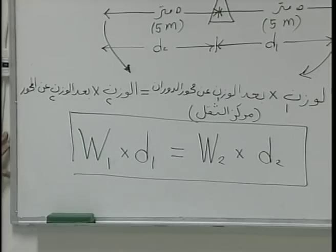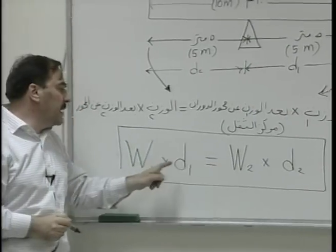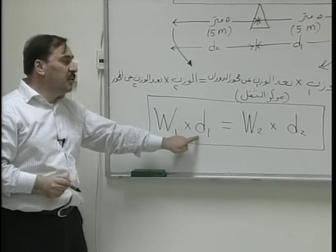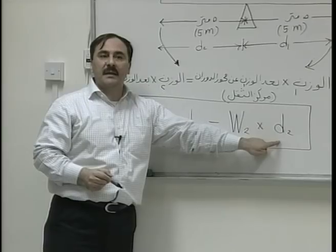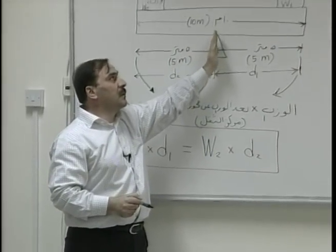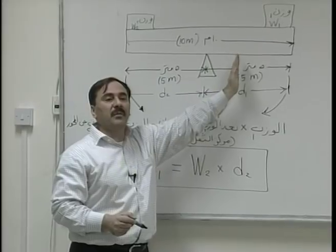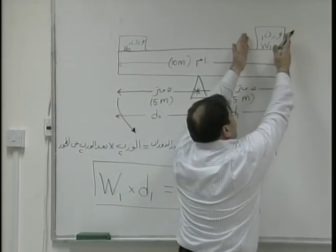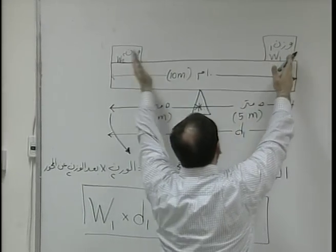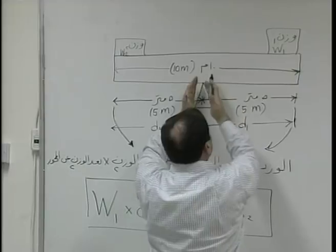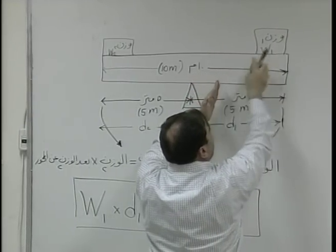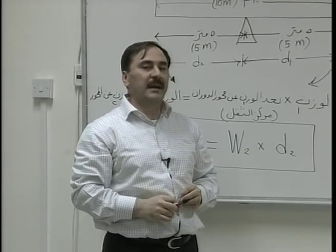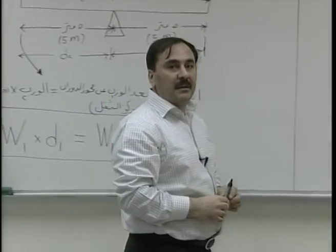If the first weight is not equivalent to the second, the first distance would not be equal to the second. This means that the center of gravity would move closer to the larger weight. If the first object were greater in weight than the second, the fulcrum would move closer to that body — and this is what has happened in the experiment we have done.